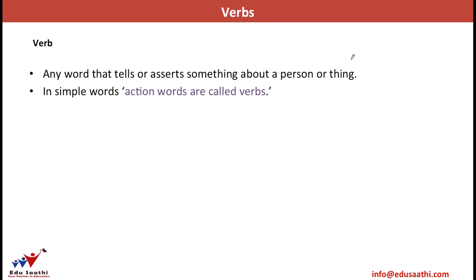The person who does work — the word that tells or asserts something about that person — is the subject. Whatever the subject does is the verb. Mind the word 'doing' in the definition. Wherever in the sentence we observe something happening, the word that justifies this happening — that tells you about something being happening — that word is the verb.